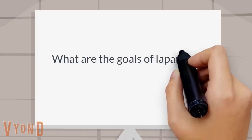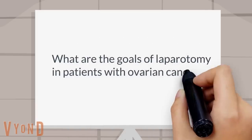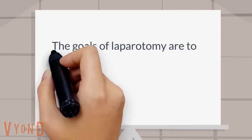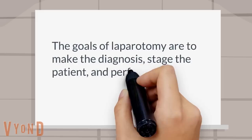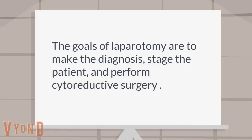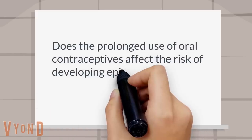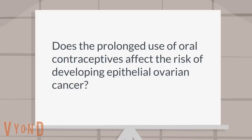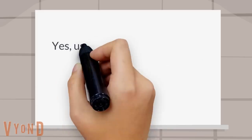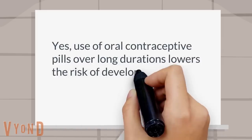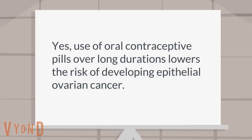What are the goals of laparotomy in patients with ovarian cancer? The goals of laparotomy are to make the diagnosis, stage the patient, and perform cytoreductive surgery. Does prolonged use of oral contraceptives affect the risk of developing epithelial ovarian cancer? Yes, use of oral contraceptive pills over long durations lowers the risk of developing epithelial ovarian cancer.